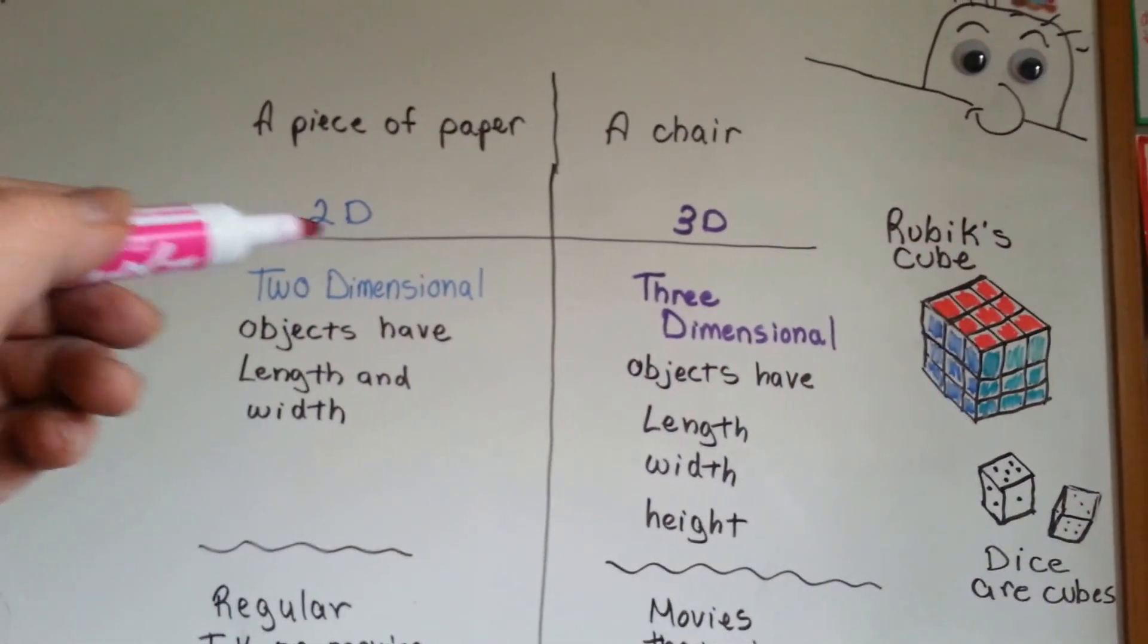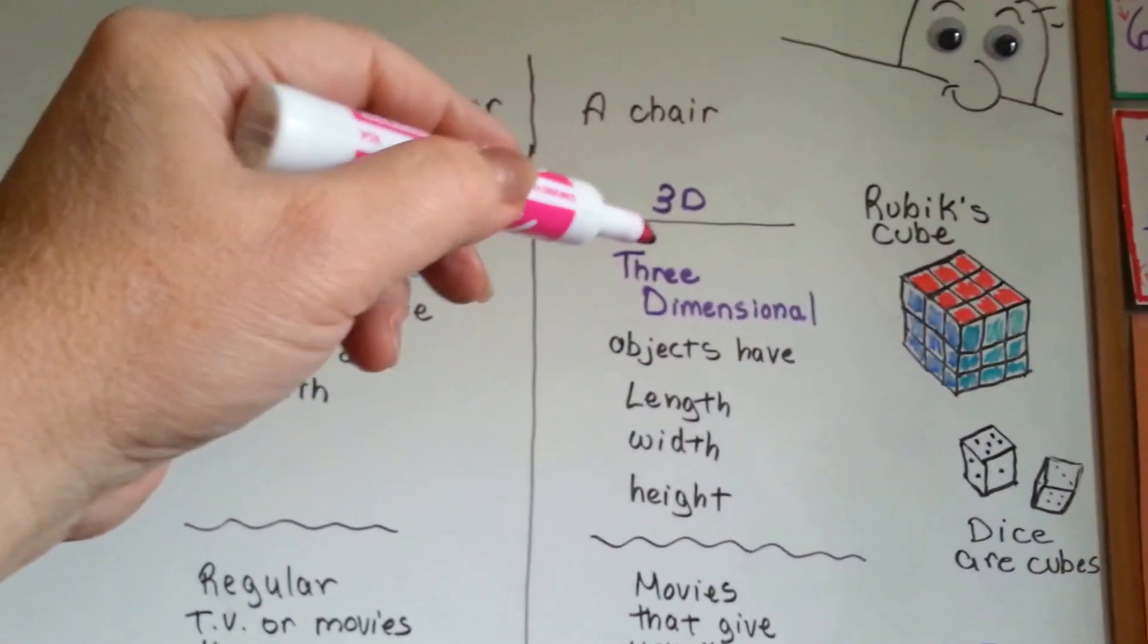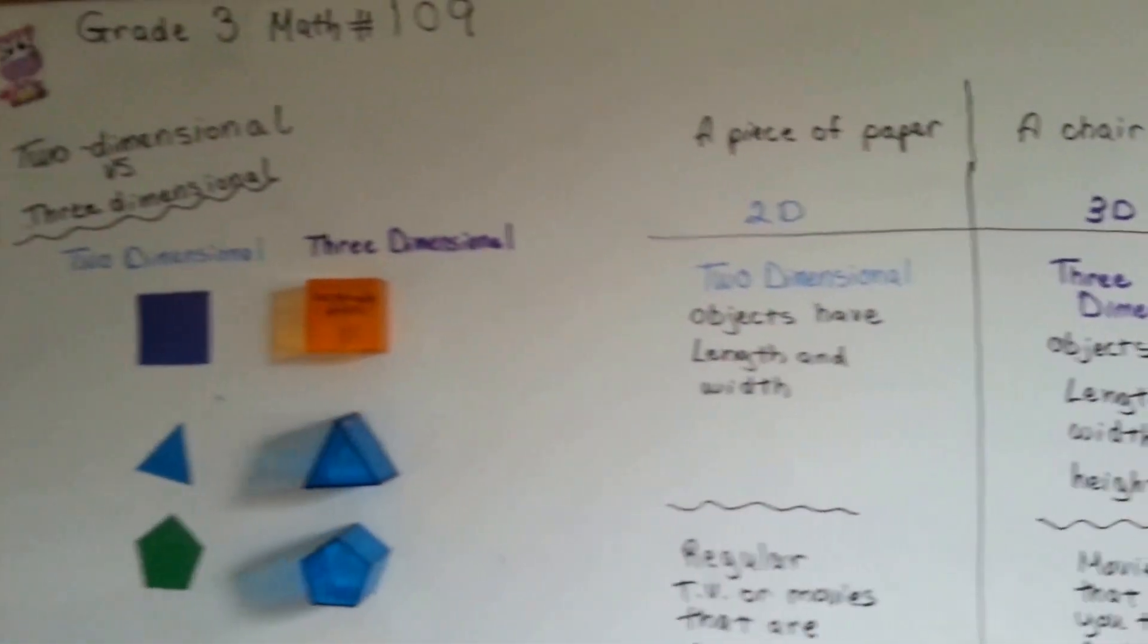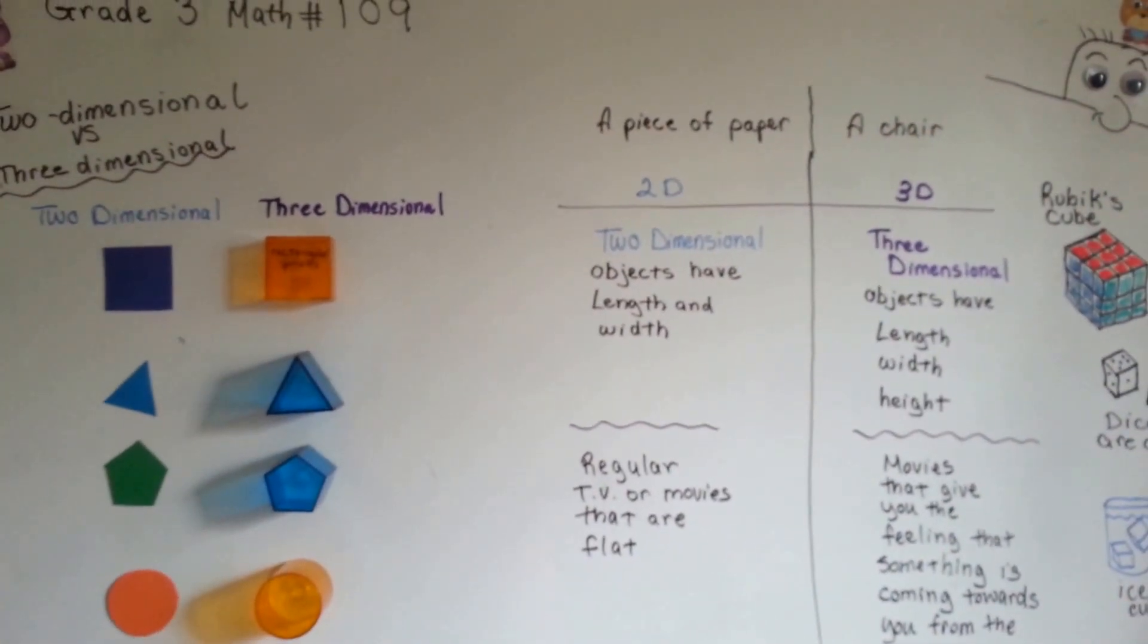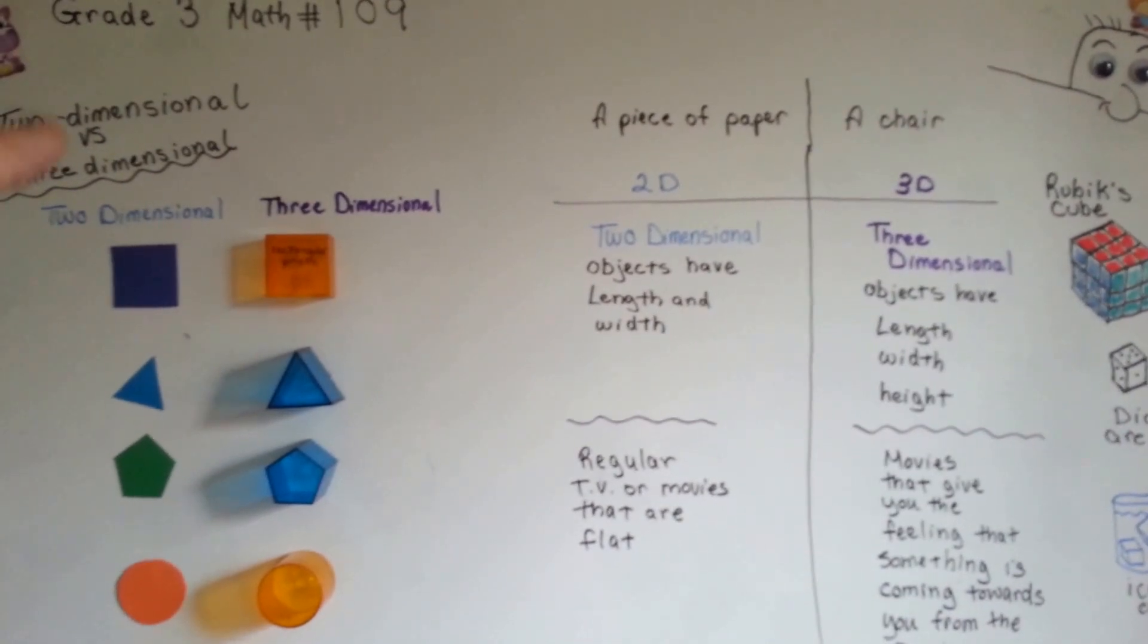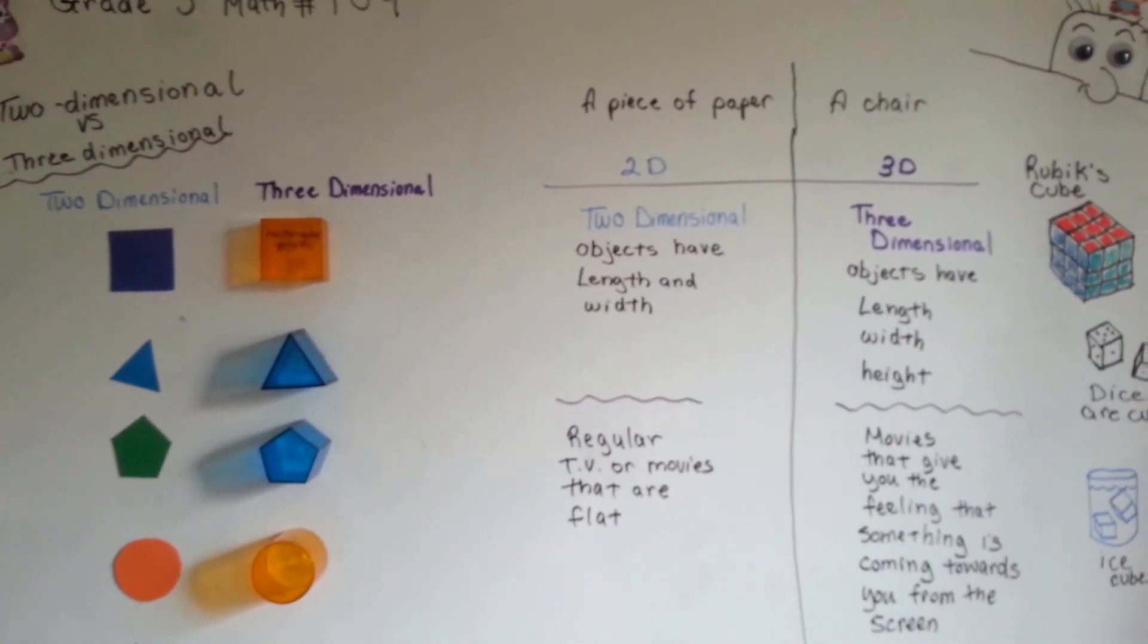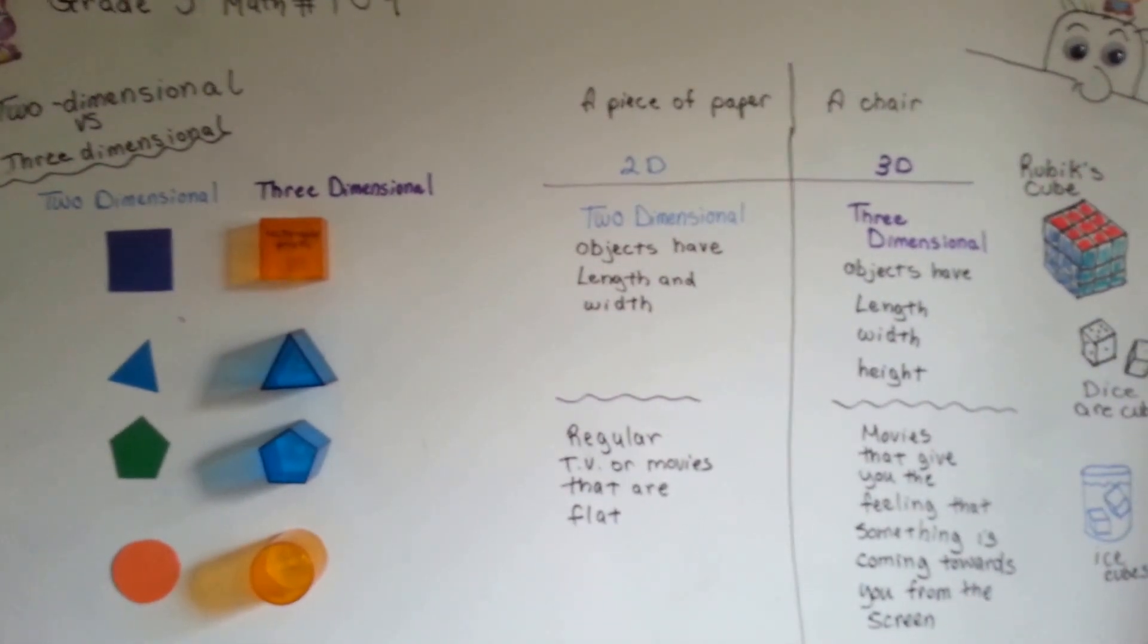So, a piece of paper would be 2D and a chair would be 3D because the chair has height and width and length. So, that's the difference between two-dimensional, 2D, and three-dimensional, 3D. And in our upcoming videos, we're going to be talking about two-dimensional, flat planes, like a piece of paper, in different shapes. So, I hope to see you there. See you next time. Bye.